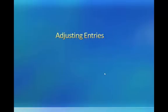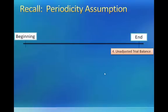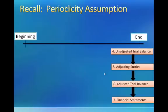In the following module we will discuss adjusting entries. Recall from Chapter 3 that adjusting entries are performed at the end of the accounting period to convert the unadjusted trial balance to the adjusted trial balance. It is necessary to perform adjusting entries to ensure accurate reporting of both income statement and balance sheet accounts.